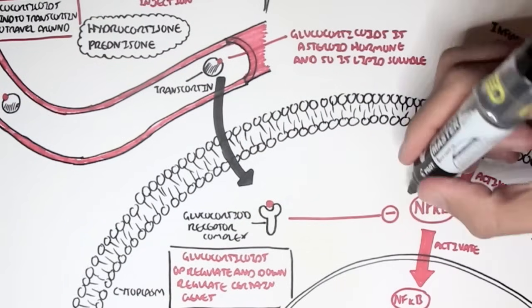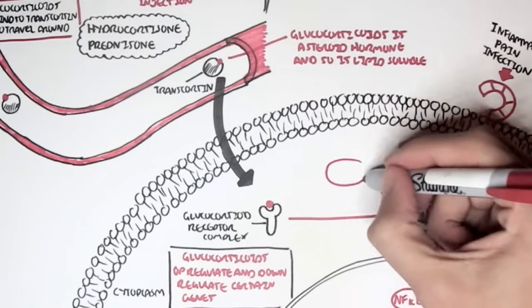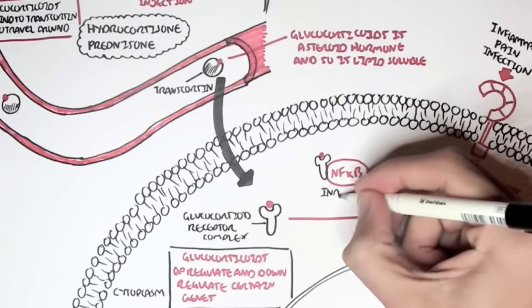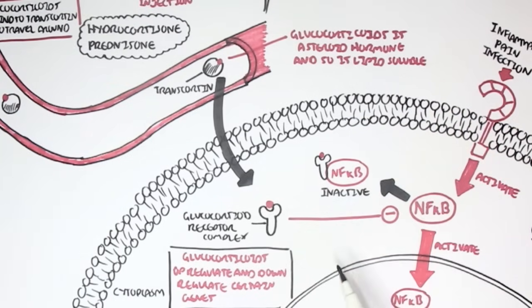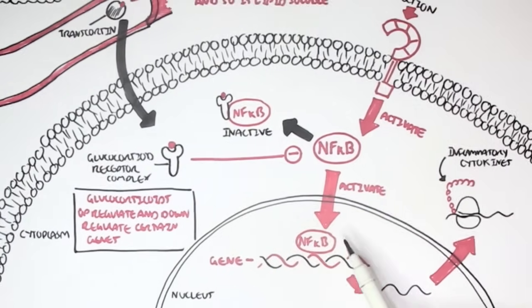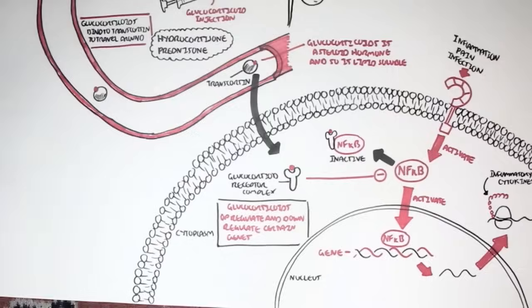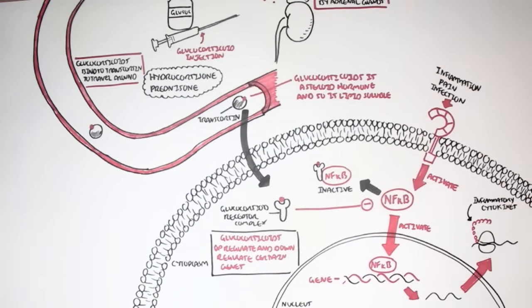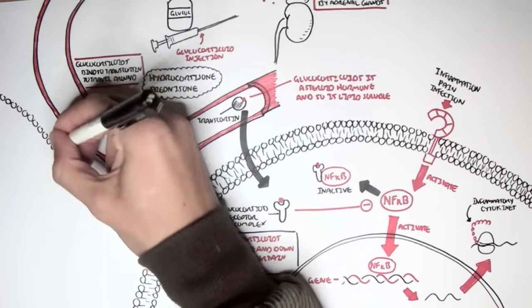Then this glucocorticoid receptor with the glucocorticoid will then essentially inhibit Nucleofactor Kappa B's activity, which will make Nucleofactor Kappa B inactive, and thus will not produce inflammatory cytokines, will not produce inflammatory chemicals, and so will suppress inflammation. And this is why glucocorticoids is a powerful anti-inflammatory drug. This is just one example.